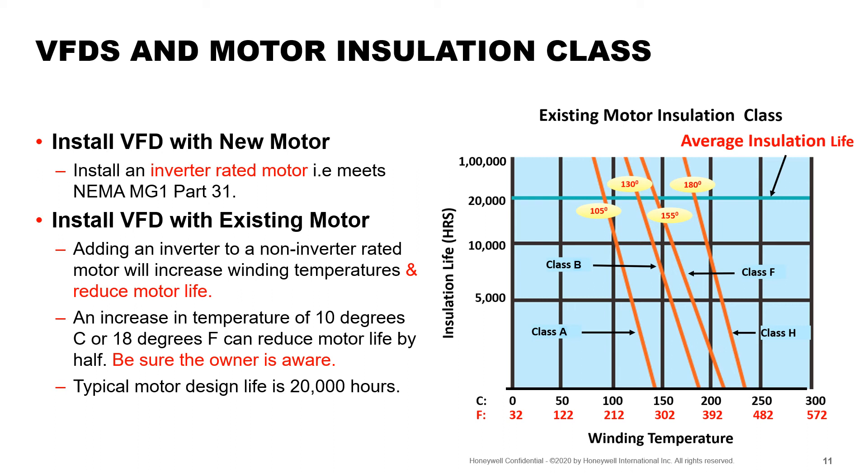Every motor has a nameplate and on it you will find the NEMA insulation class. The most common classes of insulation are A, B, F, and H. The greater the insulation class, the greater the temperature the insulation can withstand without degradation. Class A is found on older motors and has the lowest tolerance to heat. Class B motors are commonly used for fans and pumps. Motors with class A or B insulation may fail prematurely when paired with a VFD, especially if set up to run at lower speeds. Motors with insulation class F or H are well suited for applications with VFDs. These are called inverter duty motors. The best thing to do is to replace a non-inverter rated motor with an inverter duty motor when the VFD is installed. However, the owner may choose to upgrade with VFDs first and replace the motors with an inverter duty motor later when the motor fails.